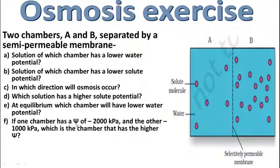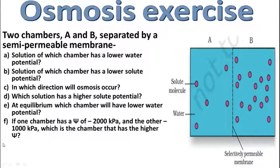If one chamber has psi (water potential) value of minus 2000 kilopascal and the other has 1000 kilopascal — तो A के minus में value है, A के plus में है — which chamber has higher water potential? हमने देखा है कि जितना pressure apply किया जाता है, उतना ही ज़्यादा water potential मिलेगा। तो जो 1000 kilopascal value है, वो ज़्यादा है, जिसकी वज़ह से उस chamber का water potential भी ज़्यादा मिलेगा।